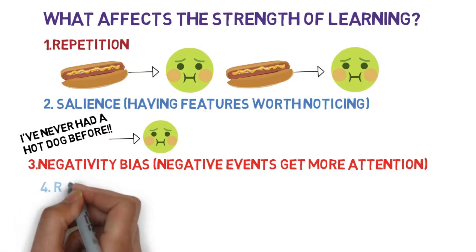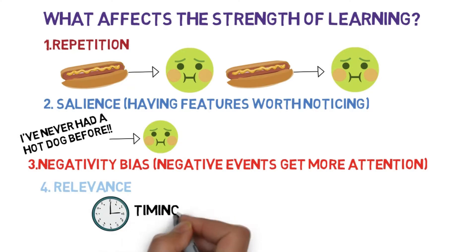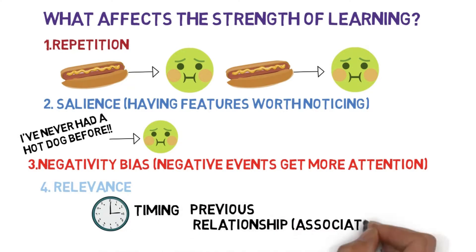Relevance is also important. You later find out you got sick because of germs you caught from someone else, but you didn't get noticeably affected by the germs until after you ate the hot dog. So because of the closeness of the timing and the relevance of nausea to the stomach and food, the hot dog got the stronger association rather than the germs.